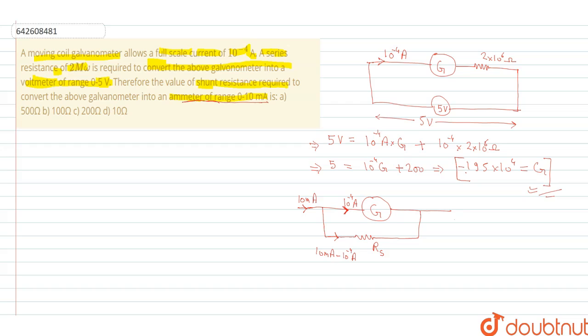So in this situation we have the general equation that is 10 to the power minus 4 ampere, the current, into G is equal to the value of current going through, passing through the shunt and the resistance of the shunt.